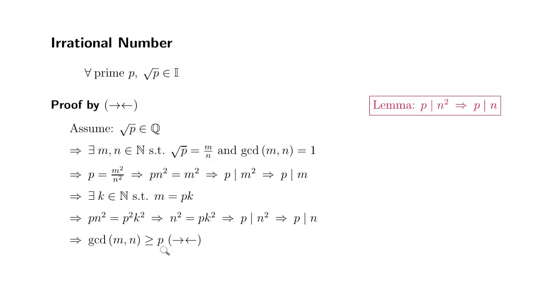So the greatest common divisor is at least p, which is a contradiction because we made sure that the greatest common divisor of m and n is equal to 1.